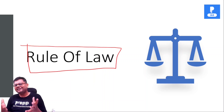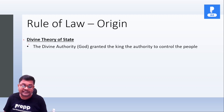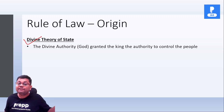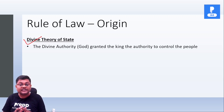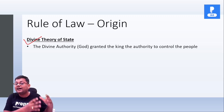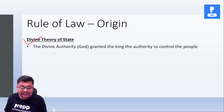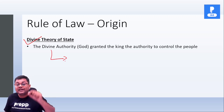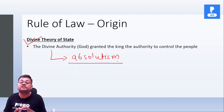Friends, in ancient time, in medieval time, there is one doctrine of divine theory of state. And what does this theory mean? That the king derives their power directly from god. And that's why they cannot be held accountable for their actions. They can do anything. Means this theory legitimizes absolutism — there is no restriction on the powers of the king.